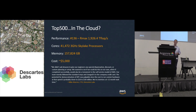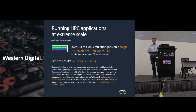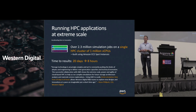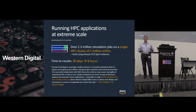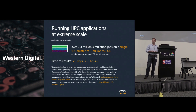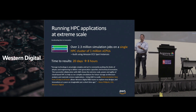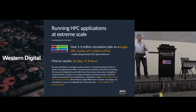You can see how much it cost them — right around $5,000. Some people said that's a stunt — can you do any real work? Well, here's another customer: Western Digital. They're running simulations of compound interactions when making chemicals to create platens for their hard drives. Their typical workflow took about three weeks for a simulation run. On AWS, they scaled up to a million cores and ran it in eight hours. Think about what that does to time to market and research value.